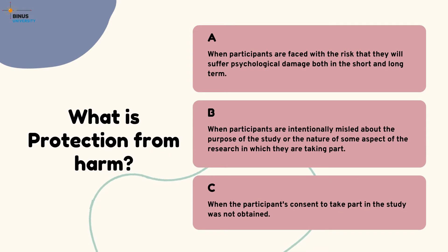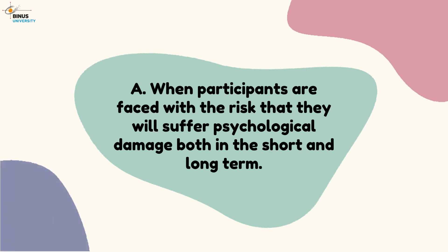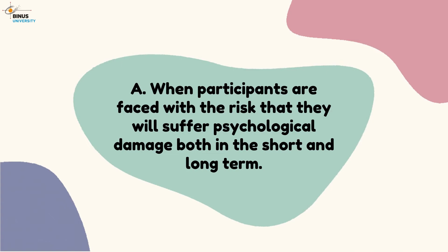The third question: what is protection from harm? A. When participants are faced with the risk that they will suffer psychological damage both in the short and long term. B. When participants are intentionally misled about the purpose of the study or the nature of some aspect of the research. C. When the participant's consent to take part in the study was not obtained. The correct answer is A: when participants are faced with the risk of psychological damage both in the short and long term.